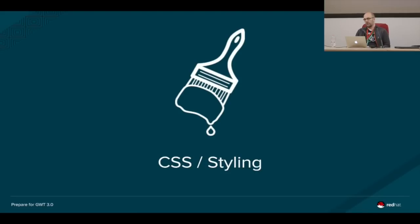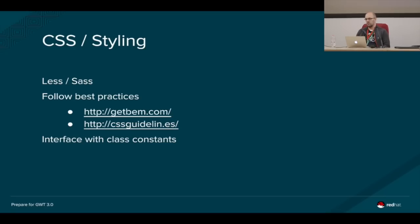The next thing I want to talk about is CSS and styling. There are many options. In the current codebase we're using CSS resources. When we decided to make the switch to the next major version, we looked at GSS resources and other approaches. We ended up using Less, because the PatternFly library — which we heavily use — already comes with a set of Less files. We import those Less files and include our own Less files on top of that.